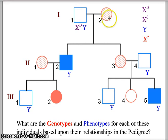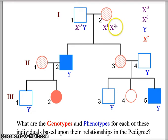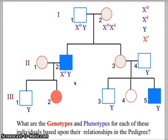The mother also does not have Duchenne, so she's going to be X capital D, but she is a carrier, which means she's also going to have the X lowercase d. Unfortunately, she passes that lowercase d to her son who has Duchenne muscular dystrophy — generation 2, individual 2.